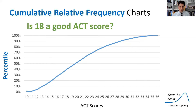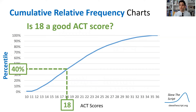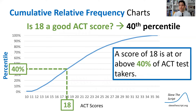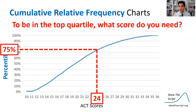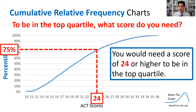Is 18 a good ACT score? Let's look at our percentile chart. We find 18 on the x-axis, draw up, and see it corresponds to the 40th percentile — so an ACT score of 18 is at or above 40% of ACT test takers. It's an okay score. Now, to be in the top quartile, what score would you need? We go from the 75th percentile, draw a line over, then down to see it corresponds to a score of 24. You need a score of 24 or higher to be in the top quartile. Note that 24 is also Q3.